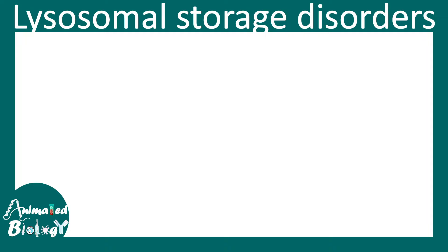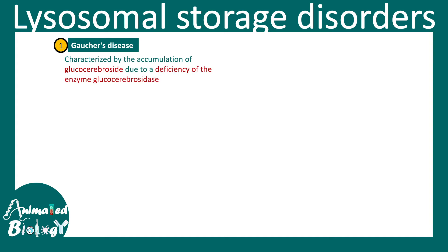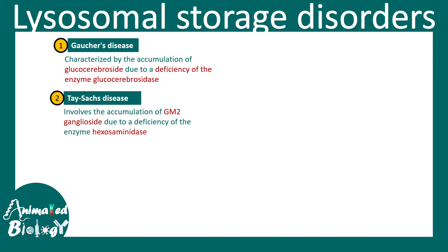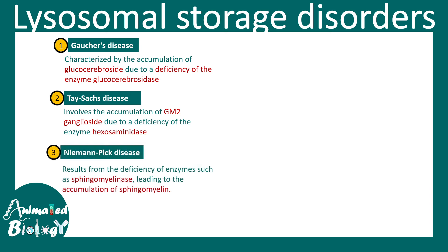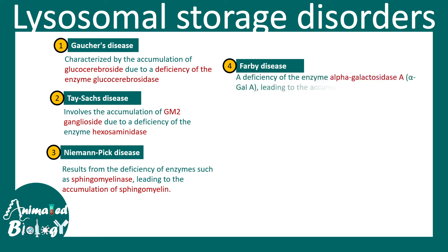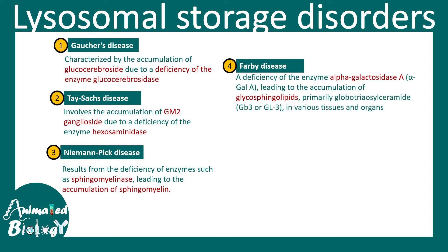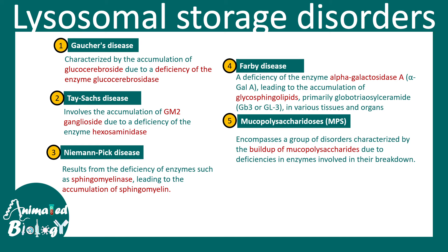First is Gaucher's disease, where glucocerebroside is not cleared properly due to a deficiency of glucocerebrosidase. In Tay-Sachs disease, GM2 gangliosides are not cleared properly due to a deficiency of hexosaminidase. In Niemann-Pick disease, sphingomyelin builds up because sphingomyelinase is non-functional. In Fabry disease, deficiency of alpha-galactosidase A leads to accumulation of glycosphingolipids. Finally, in mucopolysaccharidosis, mucopolysaccharides build up due to deficiency of the specific enzyme in the breakdown pathway.